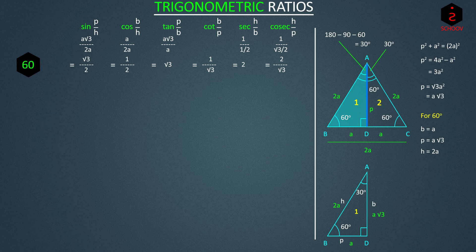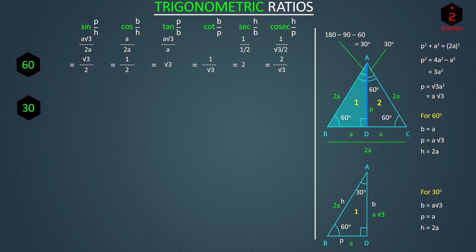Coming back to our problem, we have base A root 3, perpendicular A, and hypotenuse 2A. We can now easily write ratios for 30. Sine 30 is perpendicular by hypotenuse, that is A by 2A, 1 by 2. Cos 30 is base by hypotenuse, that is A root 3 by 2A, root 3 by 2.